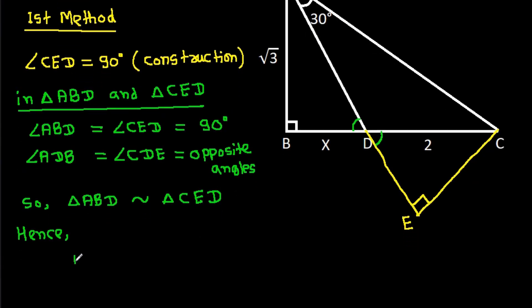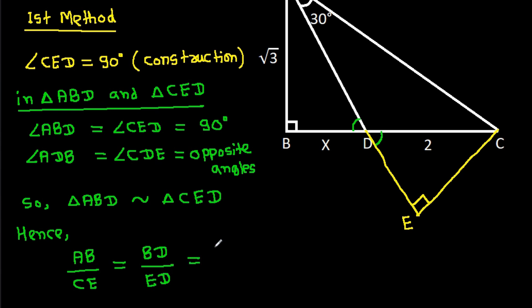Hence, AB over CE equals BD over ED, which equals AD over CD.